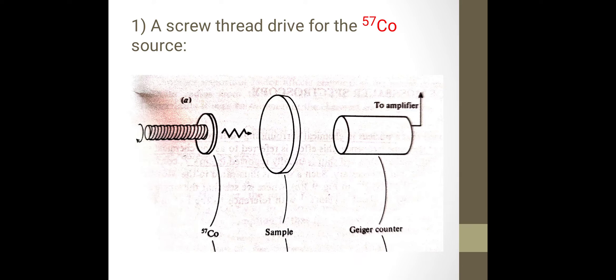See in the diagram, this is a cobalt source, this is a sample and this is a Geiger counter and this is a screw thread. Here a piece of cobalt-57 is mounted on a screw thread. Rotation of this screw thread gives a steady velocity drive to the cobalt-57 source.